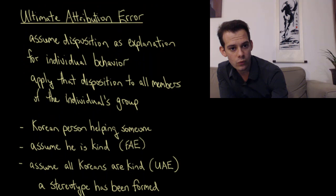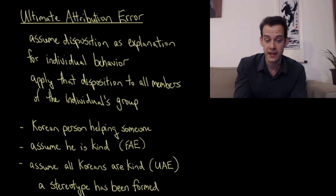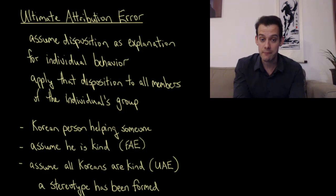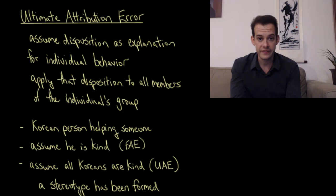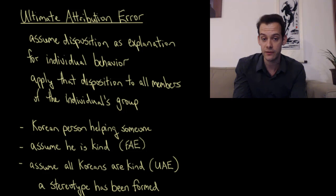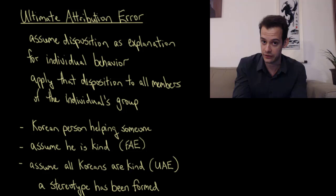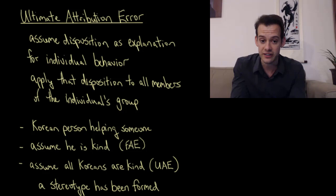So why does this happen? One way relates to the fundamental attribution error from a previous video. And if you thought that was a great name for a theory, we're going one better here with the ultimate attribution error. The ultimate attribution error involves making the fundamental attribution error and then applying it to an entire group of people. The fundamental attribution error is where we assume disposition as the explanation for someone's behavior — we focus on the person and ignore situational factors. The ultimate attribution error is when we then apply that disposition to all members of the individual's group, assuming everybody from that group has the same disposition.